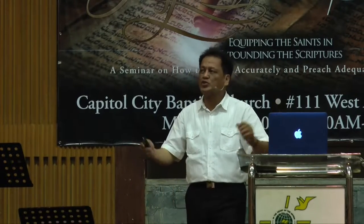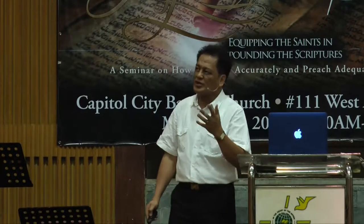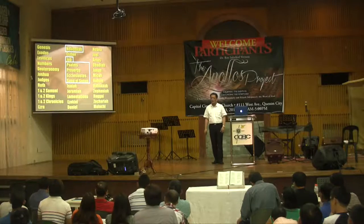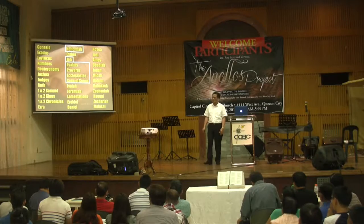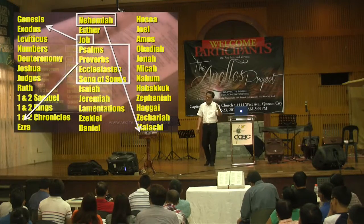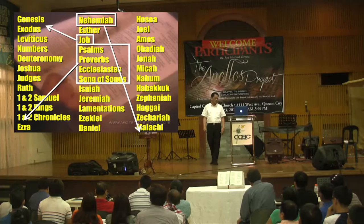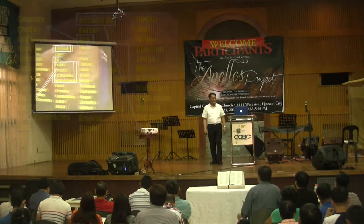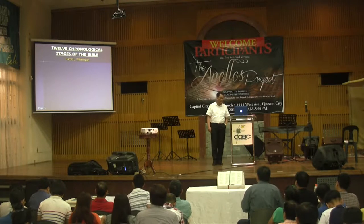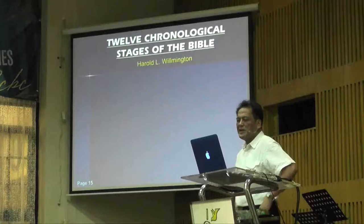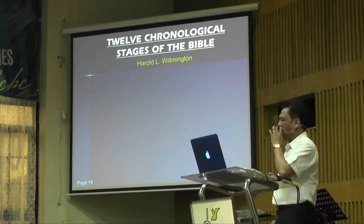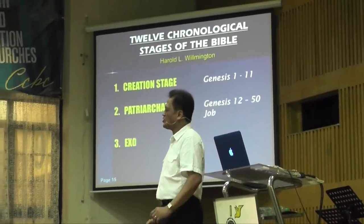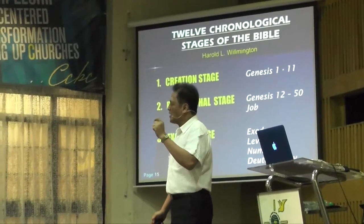And then, of course, these four books here — they're all poetic books, and most of them were written by David and Solomon. So it should be somewhere in 1st and 2nd Chronicles. Now, in your manual, we have just included there an outline taken from Harold Wilmington's Guide to the Bible — the 12 chronological stages. So very quickly, very easily, dividing the Bible into 12 stages.